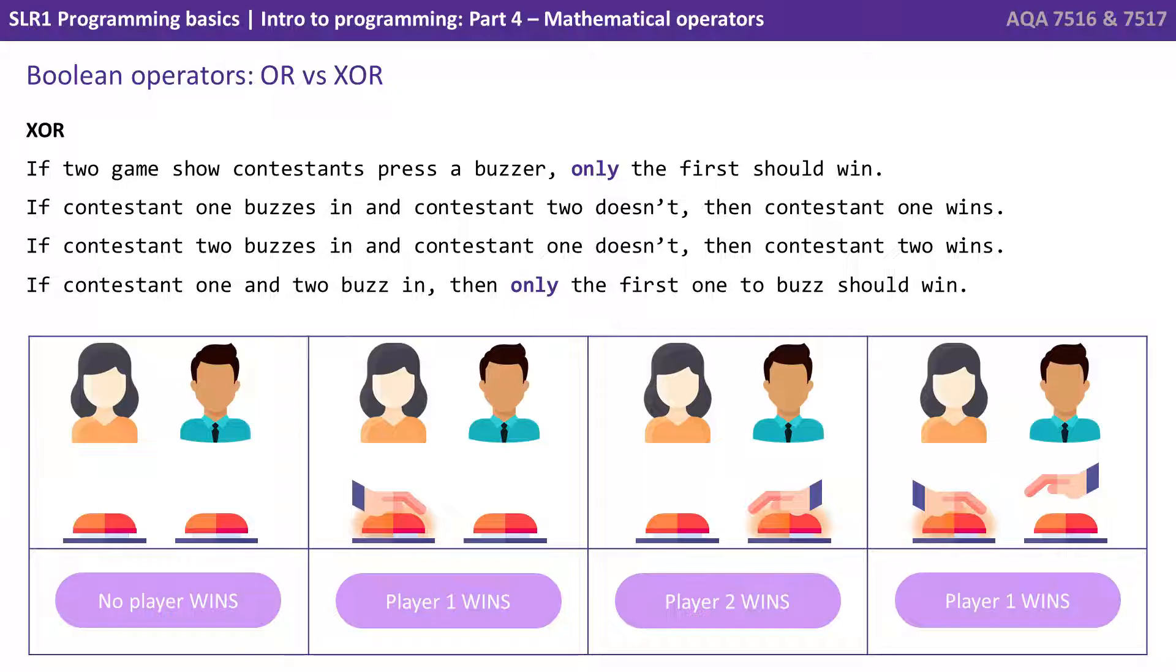Xor, however, is what we call an exclusive or. So we only reply true to an xor if one or the other is true, not if both. So a great example here is to think of buzzing in on a quiz game. If two game show contestants press a buzzer, it's only the first that should win. So if contestant one buzzes in and contestant two doesn't, then contestant one wins. If contestant two buzzes in and contestant one doesn't, then contestant two wins. But if contestant one and two buzz in, we don't want them both to win. It's only the first one to buzz in that should win.